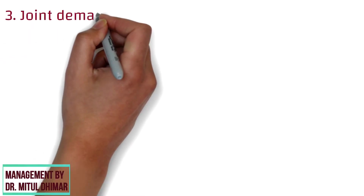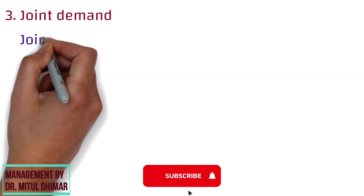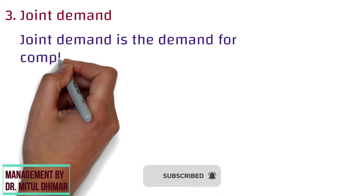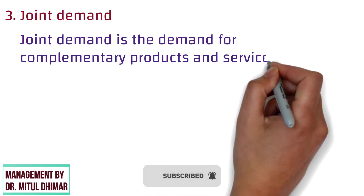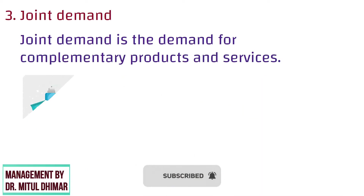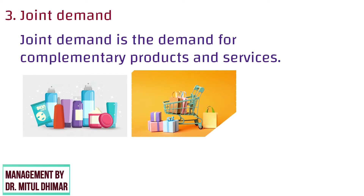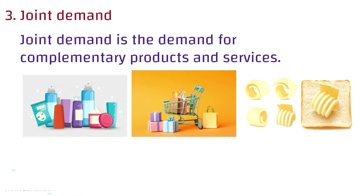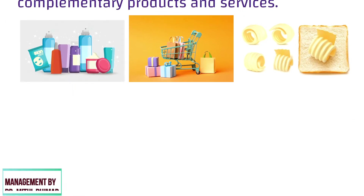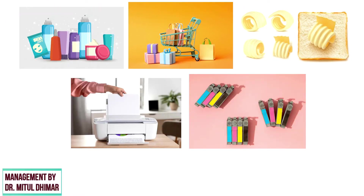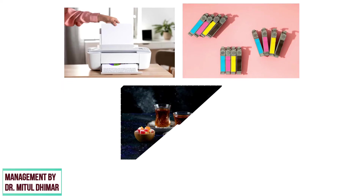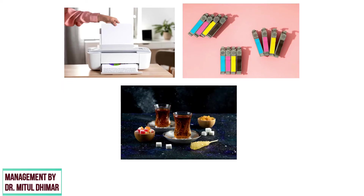Number 3: Joint Demand. Joint Demand is the demand for complementary products and services. These can be products that are accessories for others or that people commonly purchase together. For example, bread is sold along with butter, a printer needs ink to become functional, and tea and sugar are purchased as complementary to each other.